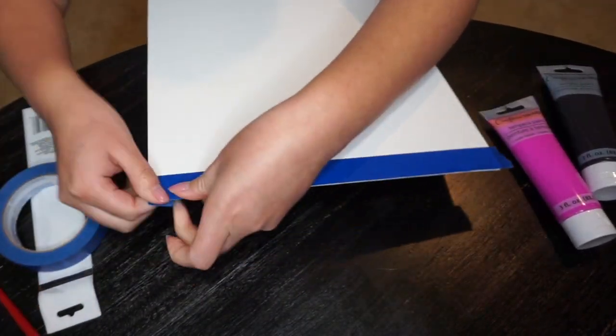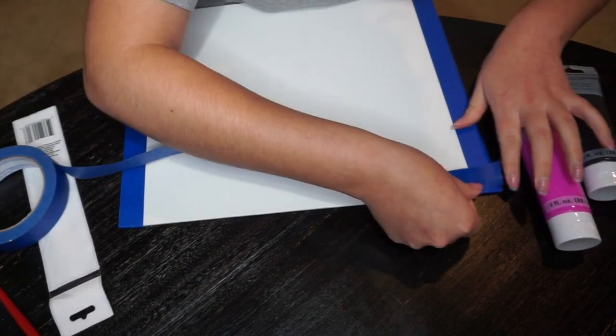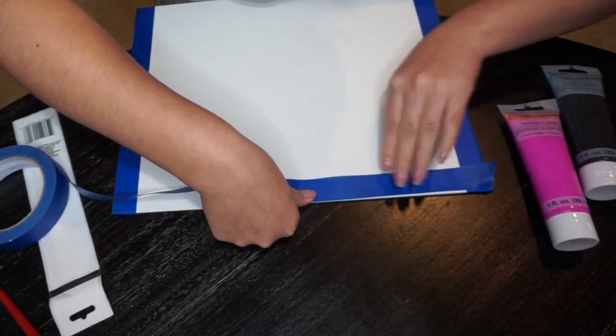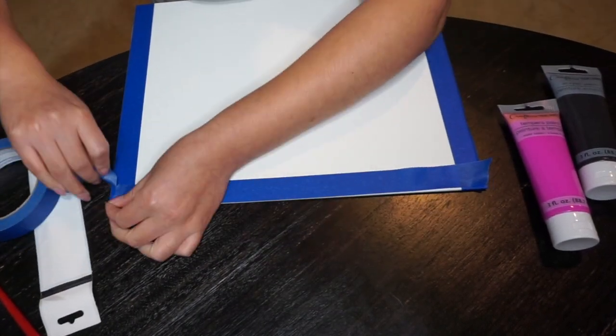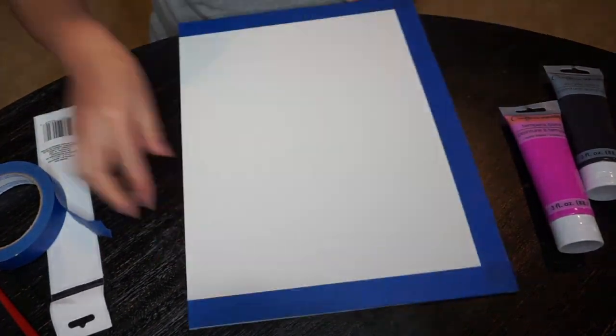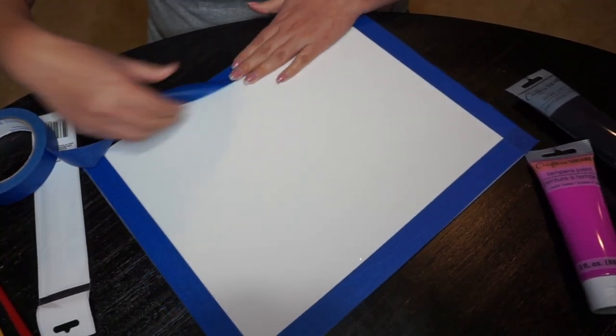So we are going to start off by just putting painter's tape all around our canvas. This is just to create a little border around our canvas so it looks a little bit more neat. We'll just go all the way around.